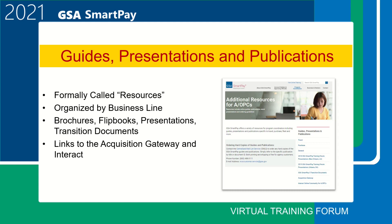Here are the additional resources for AOPCs. Each section contains brochures, flipbooks, presentations, and other information organized by business line — travel, purchase, fleet, and general — followed by foreign presentations, transition documents, and links to the Acquisition Gateway and Interact.